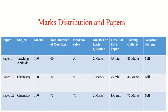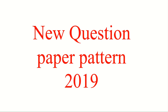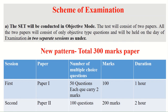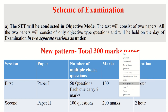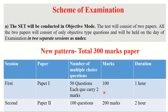Now we'll see the new question paper pattern — this is the most important thing to keep in mind. Previously there were three papers; now only two papers are there. The first paper is a general paper and the second paper is for the subject. First paper contains 100 marks, which was the same previously. The second paper now contains 200 marks. Previously the second and third papers were separate, but now they have been merged into one second paper. First paper is for one hour and second paper is for two hours. All questions are mandatory — there are no optional questions.